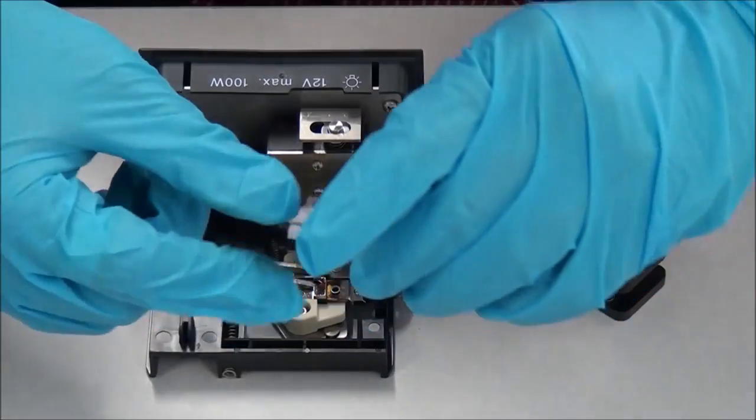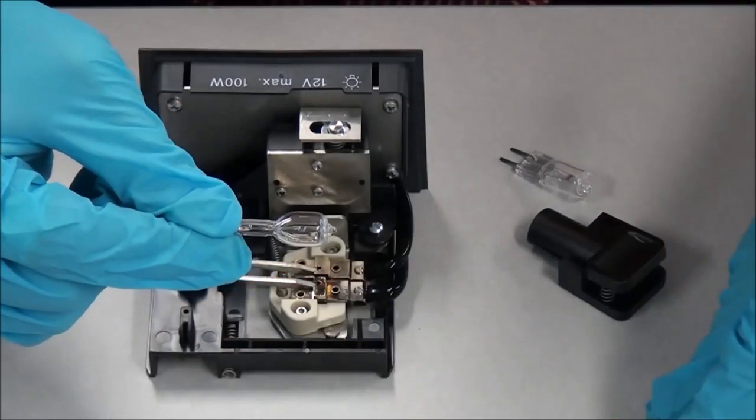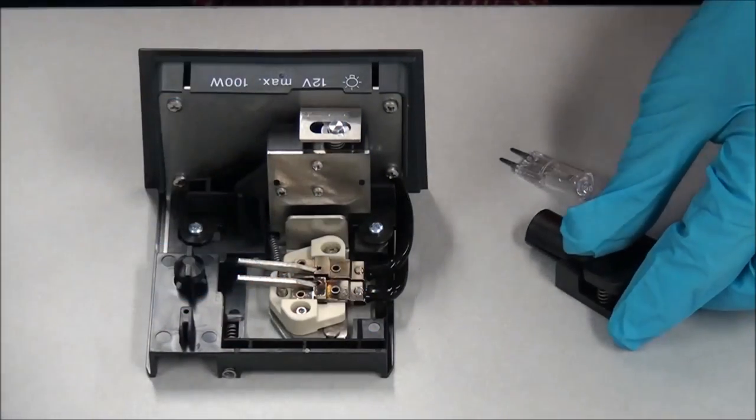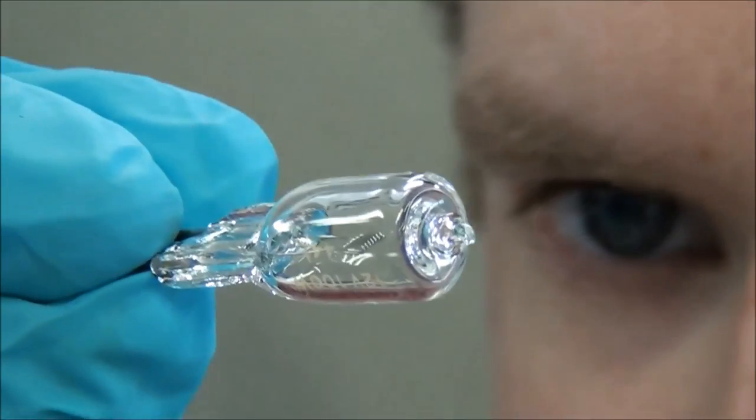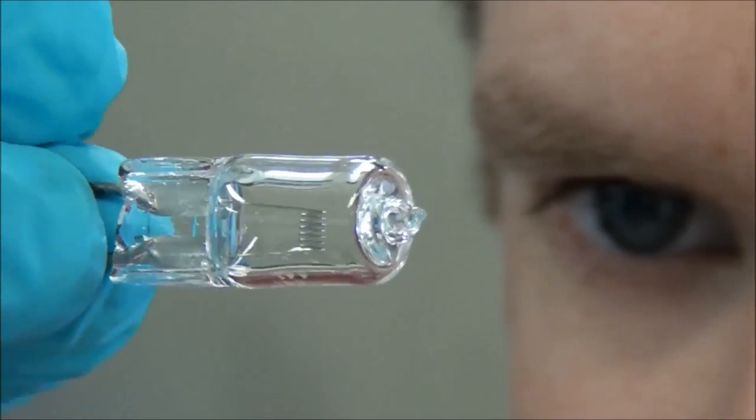Pick up the new bulb using a glove or lens paper to prevent finger oils from transferring to the glass. Finger oils can reduce the bulb's lifespan. You may want to visually inspect the new bulb.